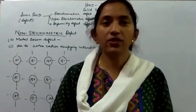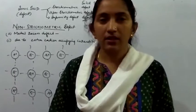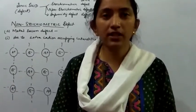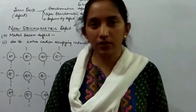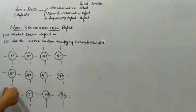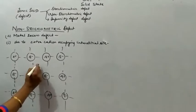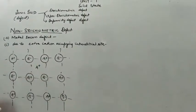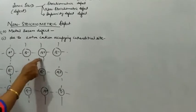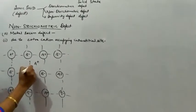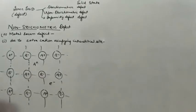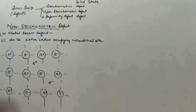Metal excess defect is due to extra cations occupying the interstitial site. The extra cations are formed by metal atoms which leave their lattice sites, leaving behind electrons. In the ionic solid arrangement, if the extra metal atom leaves its site and occupies a nearby interstitial position, an electron becomes entrapped to maintain electrical neutrality.